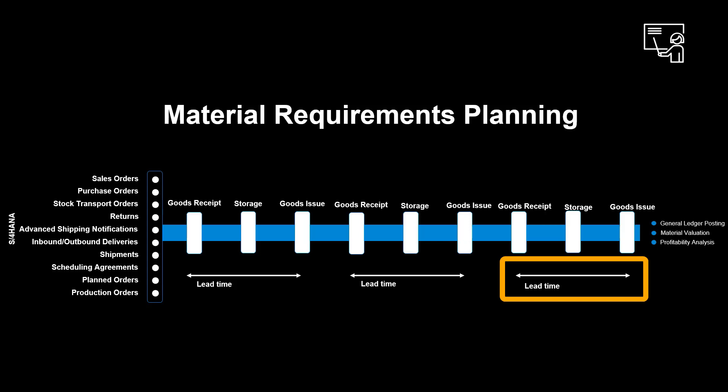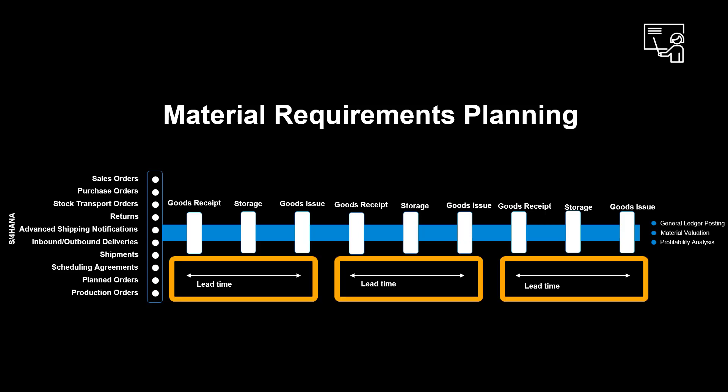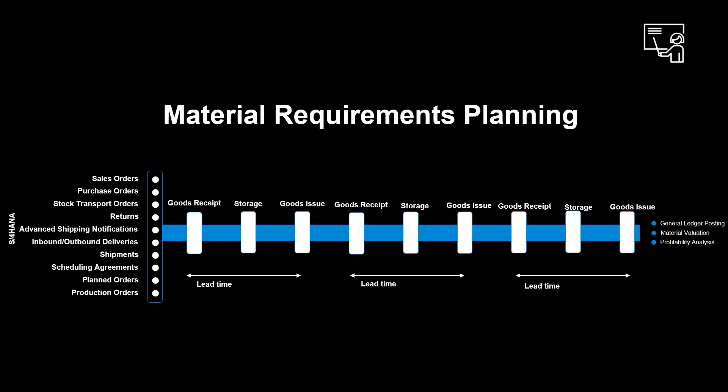Such lead times can be purchasing lead time, goods receipt lead time, and lead time for quality inspection. In more complex production, these lead times are repeated many times, as there may be several bill of materials where one component is the subcomponent of another.